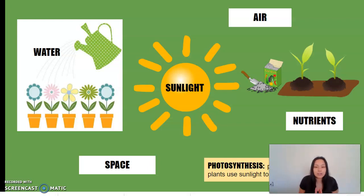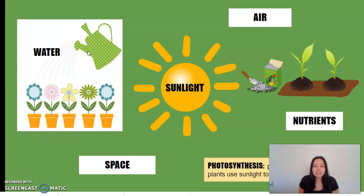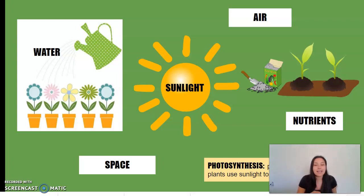A plant's roots need space so that they can spread out and absorb water and nutrients. Its leaves need space so that they can access light. When plants grow too close together, they have to compete for these resources, so it's better that they have space. Water moves the nutrients from the soil into the plant and plays an important role in photosynthesis.